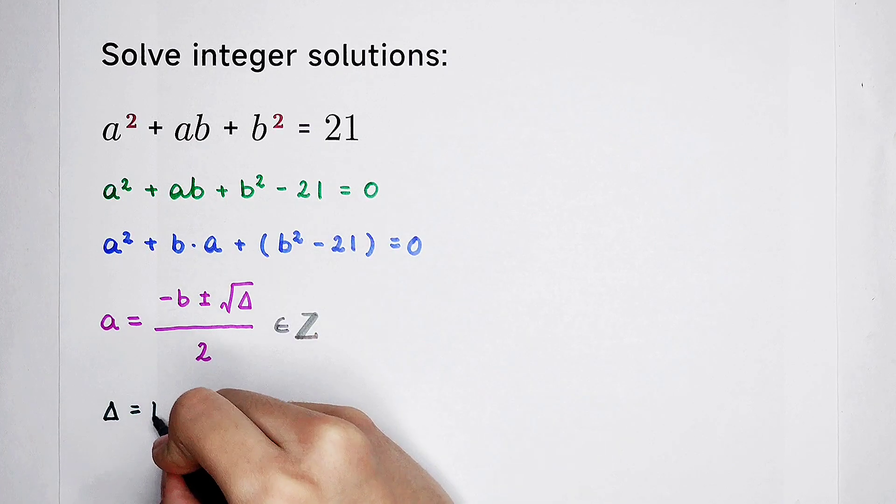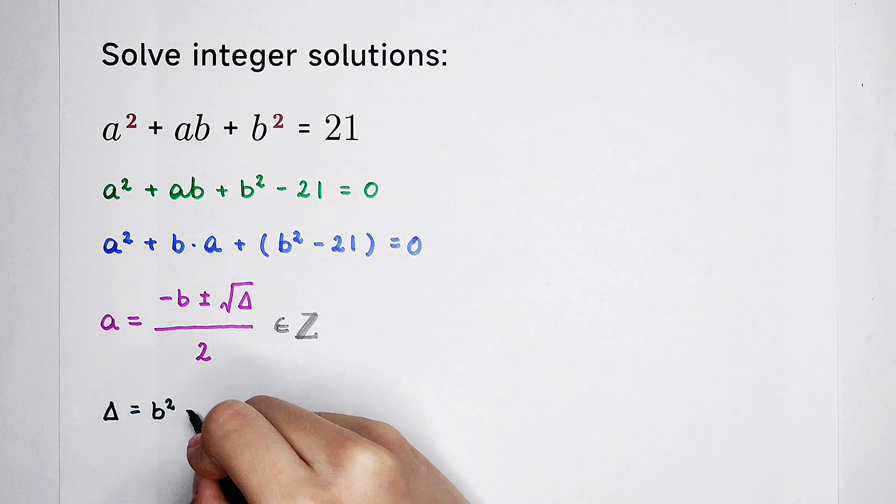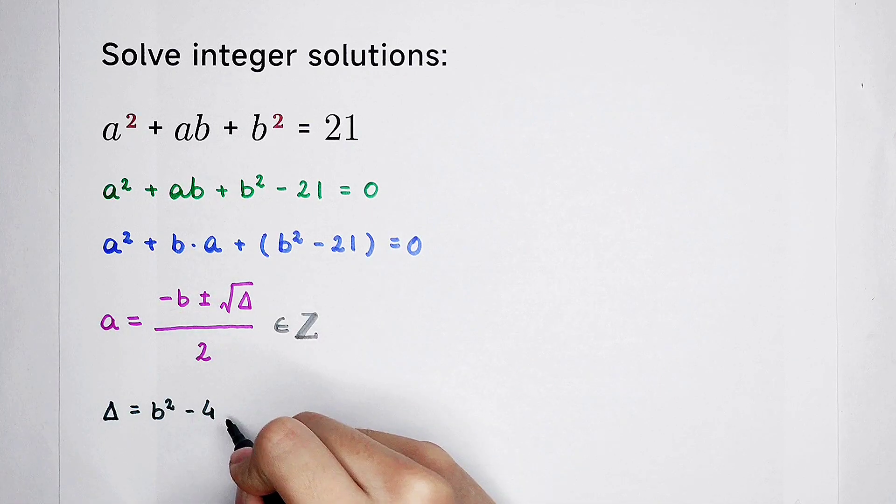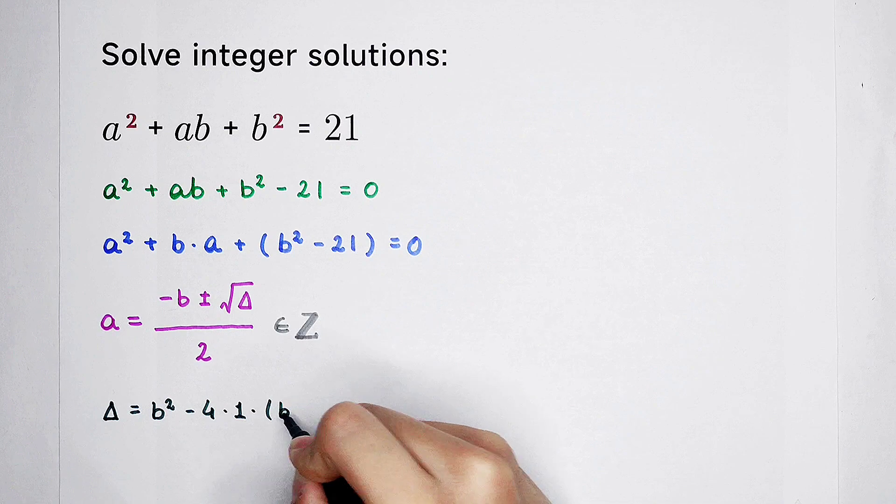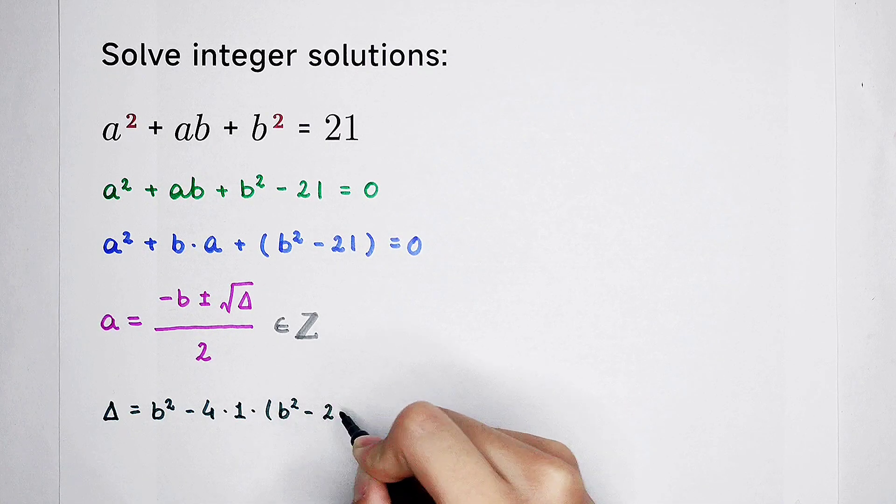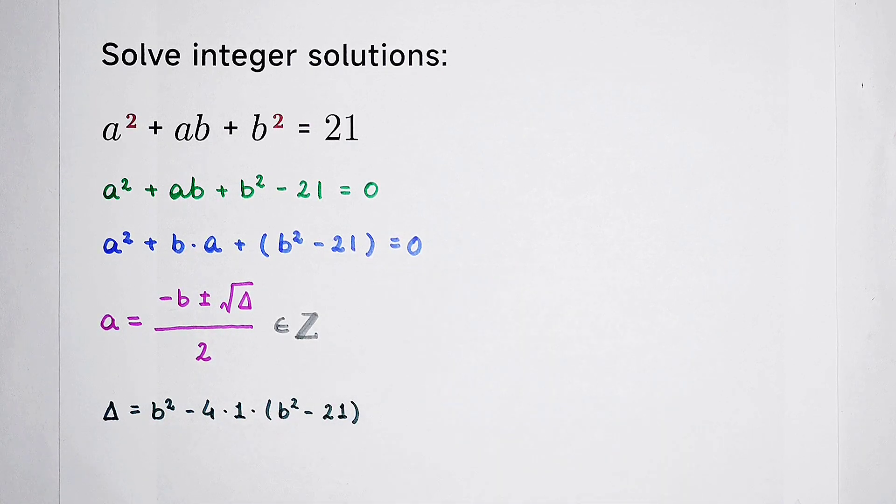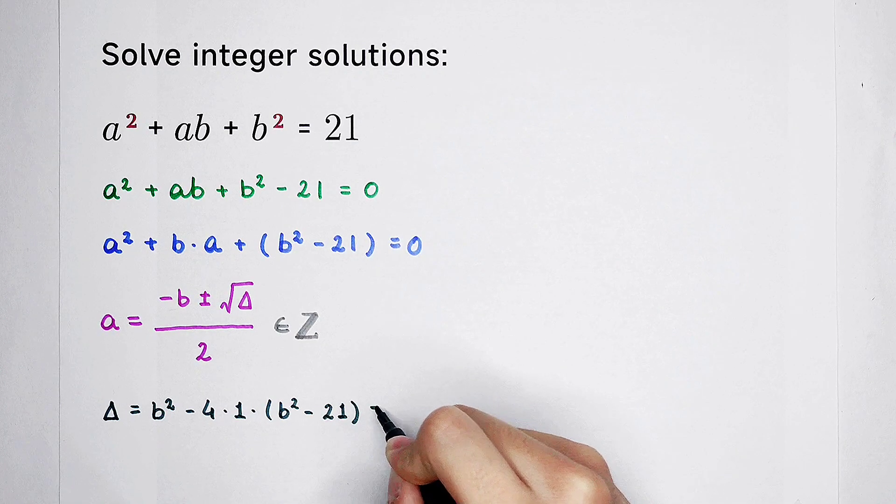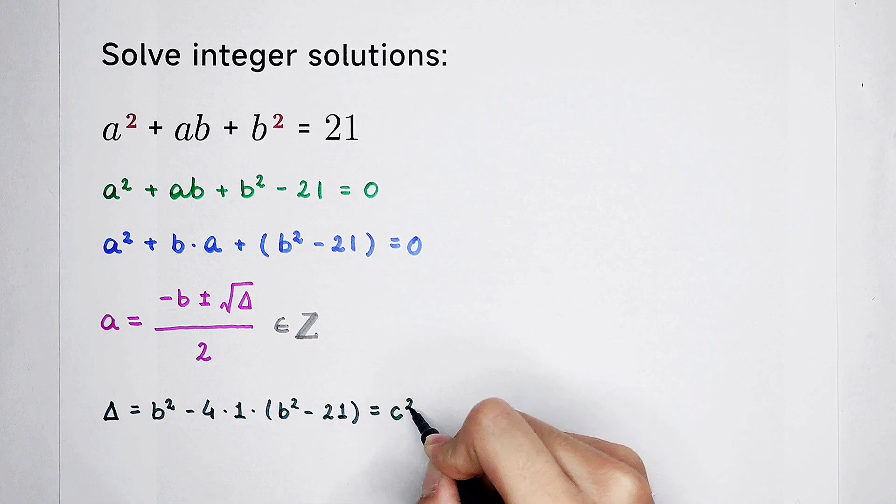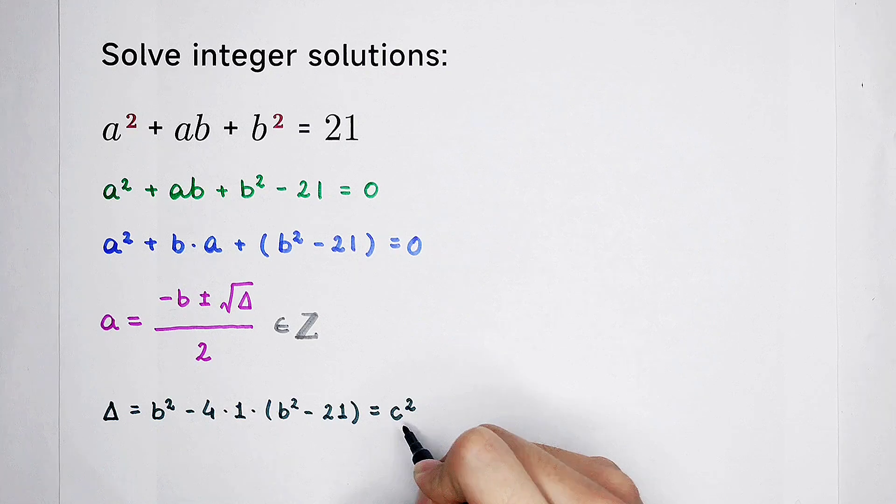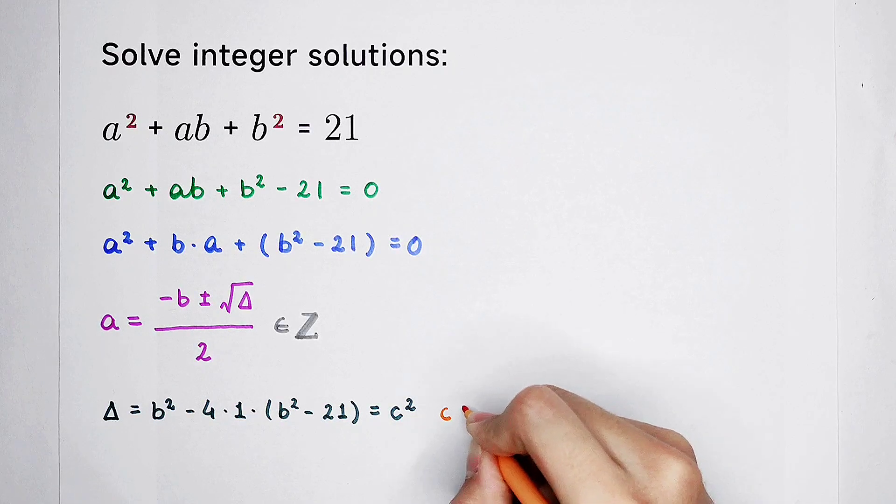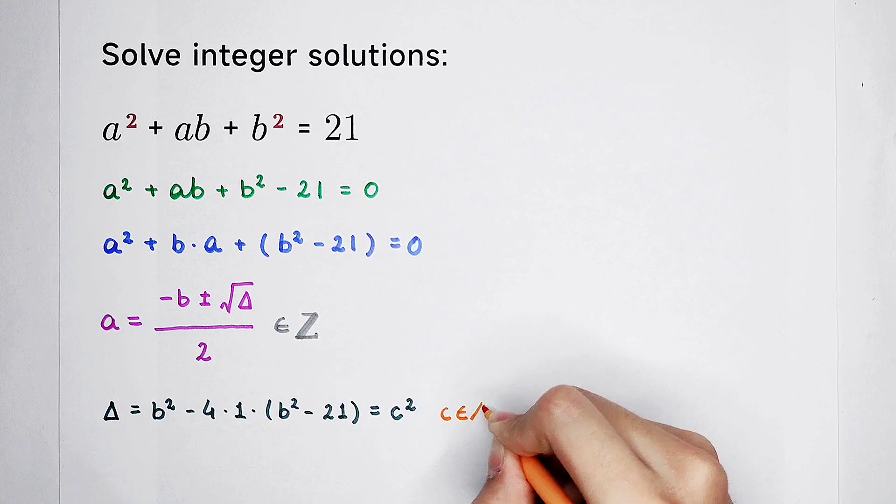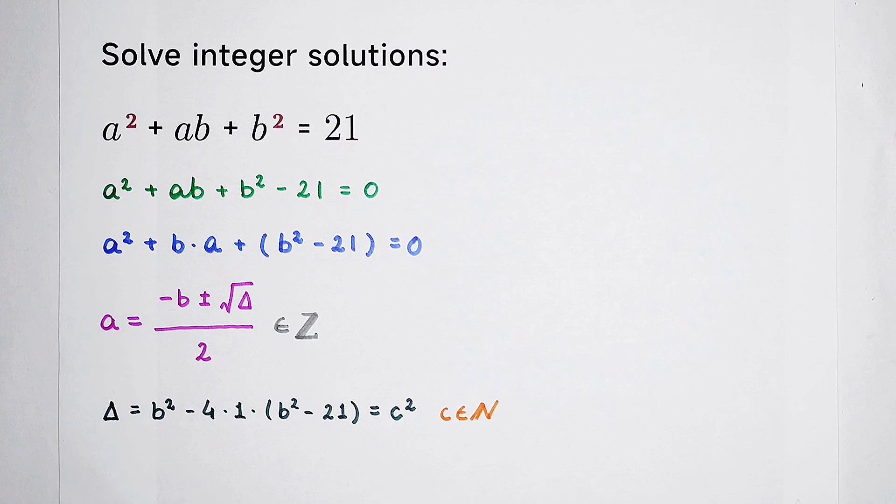And it is equal to b squared times 4 times 1, and then times b squared minus 21. And it should be a square number. We suppose, we can suppose that it is equal to c squared. And c is a natural number.